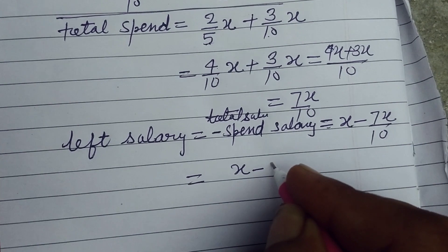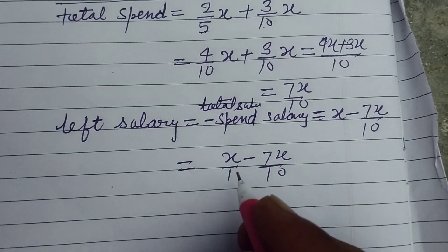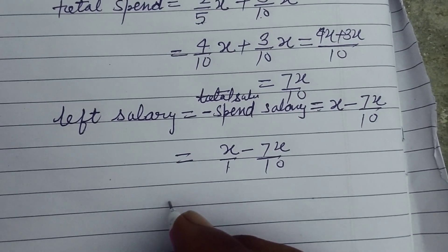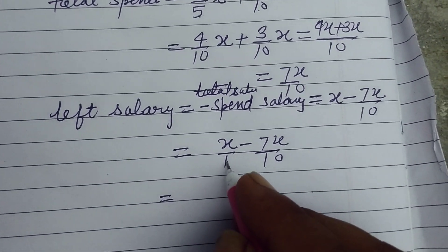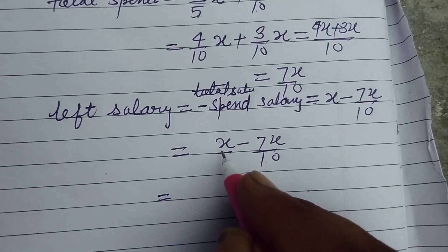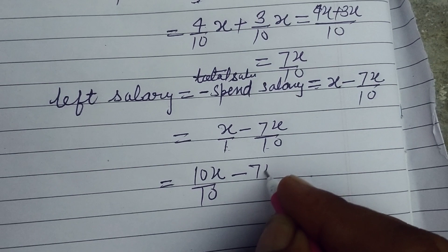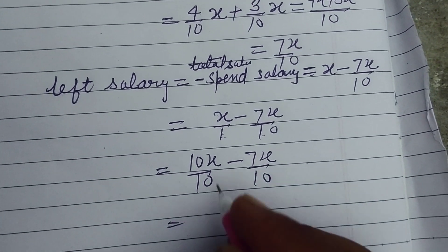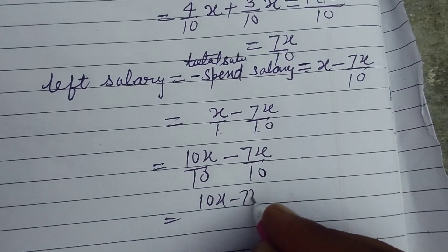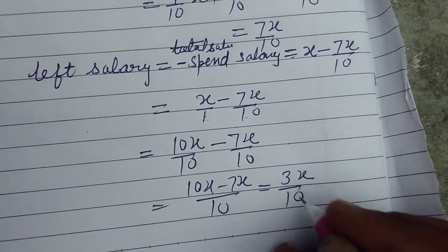So total salary is x and spend salary is 7 x upon 10. So x minus 7 x upon 10, we take denominator 1 and x. Now we multiplied to make the denominator same x by 10. So 10 x upon 10, so 10 x minus 7 x upon 10, so 10 minus 7, this is 3 x upon 10.